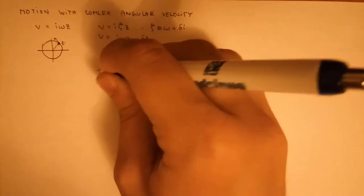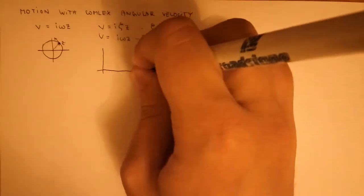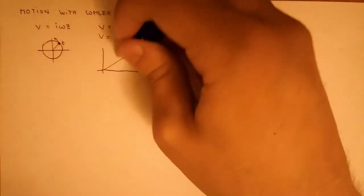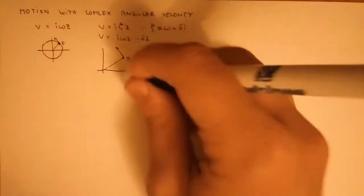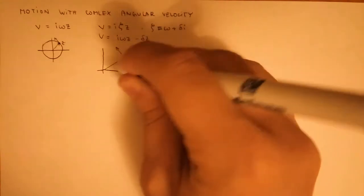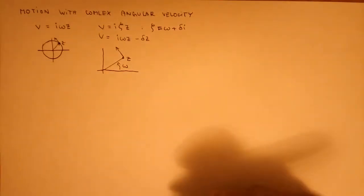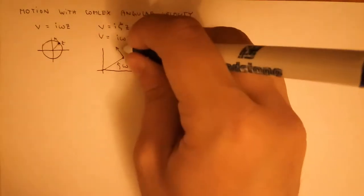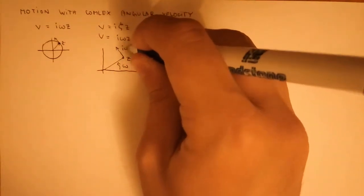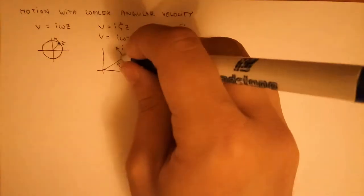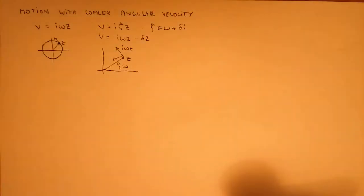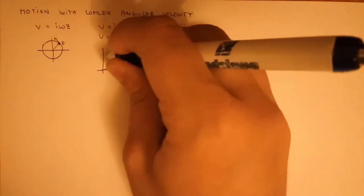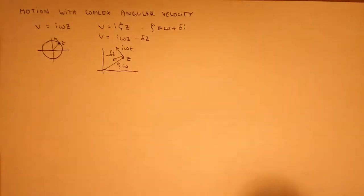The velocity has two components. Whenever you have this radial vector z, there are two components: one which is perpendicular, with omega angular velocity, so the velocity is i*omega*z; and the other one is parallel to the z vector, which is minus delta*z.